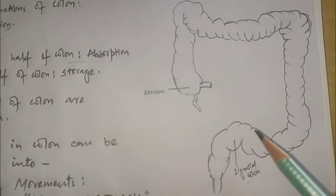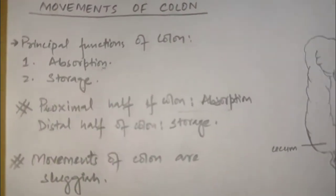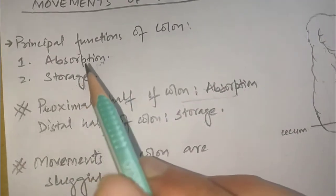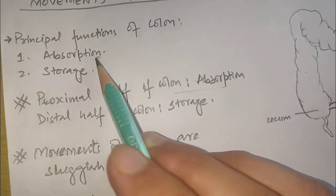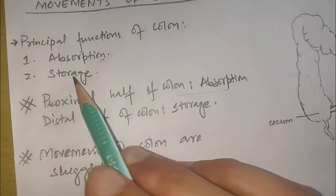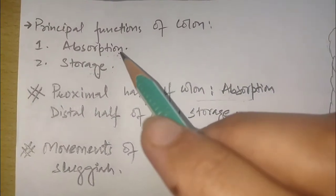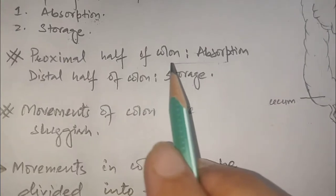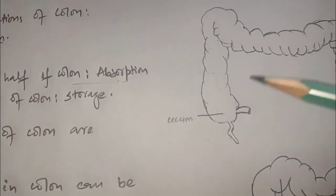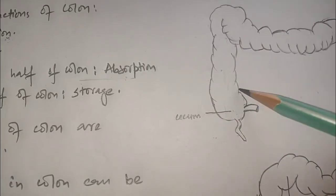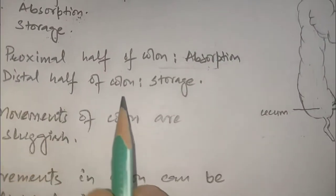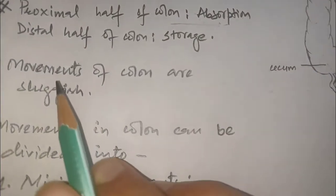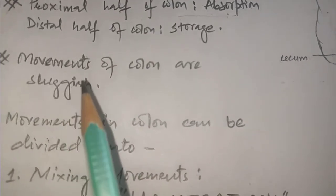Now let's go through the movements of colon. The principal functions of colon are absorption and storage. Absorption involves absorption of water and electrolytes from the chyme to form solid feces, while storage involves storage of fecal matter until it can be expelled. The proximal half of colon deals with absorption — mainly cecum and ascending colon — while the distal half, mainly sigmoid colon, deals with storage. Movements of colon are sluggish.